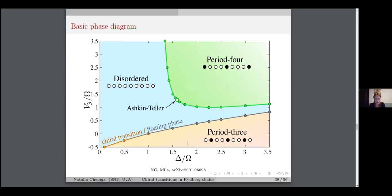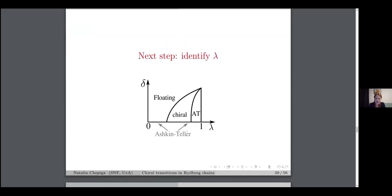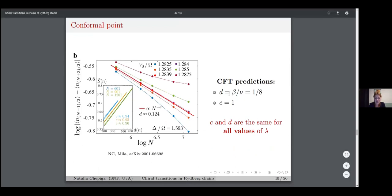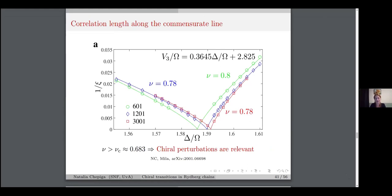There is an Ashkin-Teller point. The question we need to answer is: which Ashkin-Teller — at which parameter lambda — is this point? Neither the scaling dimension D nor the central charge can distinguish this, as they are the same for all values of lambda. What we can do is extract the critical exponent nu. We compute the exponent with which the correlation length diverges along the commensurate line, and find nu equals 0.78 — definitely above our critical value of 0.68 — so chiral perturbations are relevant.